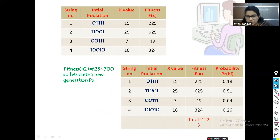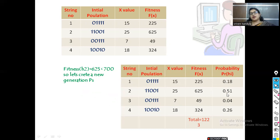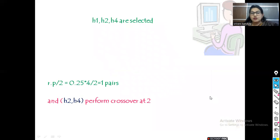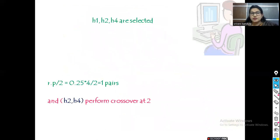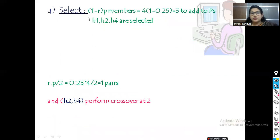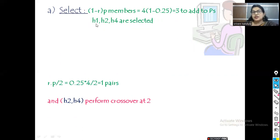Based on the probability values, we select the hypotheses with higher probability. Using the formula (1 − r) × p = (1 − 0.25) × 4 = 3, we must select 3 members. We select h1, h2, and h4 — h3 has a very low probability of 0.04. These three are added to the next offspring generation.